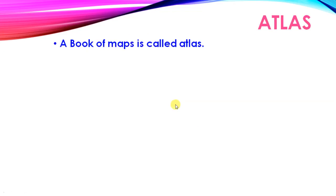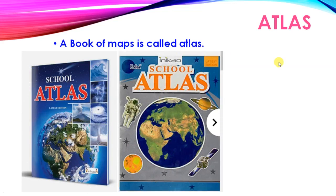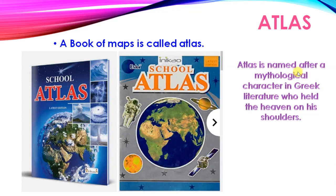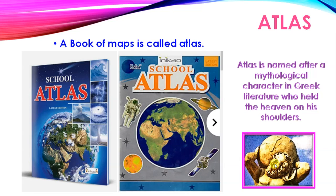Now, Atlas. A book of maps is called Atlas. This is the picture of Atlas. Atlas is named after a mythological, mythological means in imagination, character in Greek literature who held the heavens on his shoulders. You can see this picture.